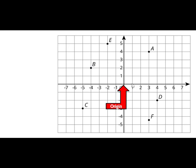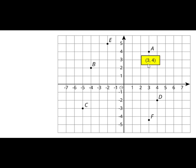Let's describe the location of points A, B, C, D, E, and F. For each point, we will start at the origin and then either move left or right and then go up or down. For point A, we're going to start at the origin and move 3 units to the right and 4 units up. The coordinate pair would be positive 3 and positive 4.